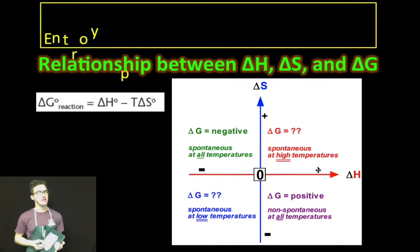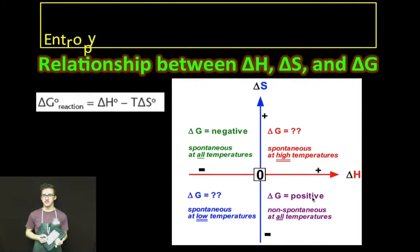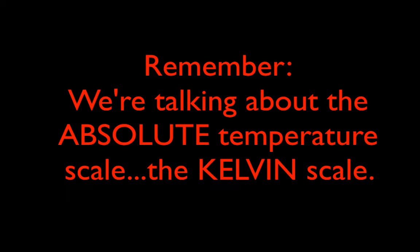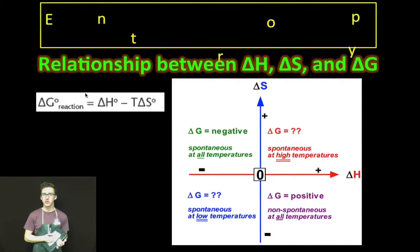However, if delta H is positive and delta S is negative, delta G is always going to be positive, no matter what temperature you're at. Go back to this equation and think about those two things. But then, and here's where the magic comes in.